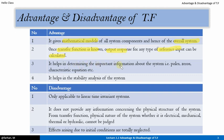Transfer function helps in determining important information about the system. The important terminologies associated with transfer function are poles, zeros, and characteristic equations. With the use of these concepts of poles, zeros, and characteristic equations, it helps in the stability analysis of the system. When the poles and zeros are known and the characteristic equation is available, stability analysis can be performed using different methods available in the frequency domain.